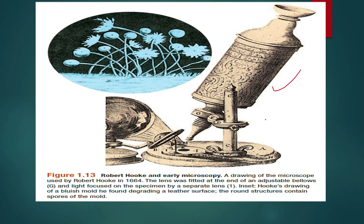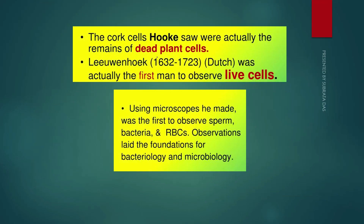Hooke used a compound microscope to study the cell and proposed the cell theory. He drew pictures of bluish mold structures. He was the first scientist to discover the cell. However, the cork cells Robert Hooke saw were actually the remains of dead plant cells — he did not observe live cells.